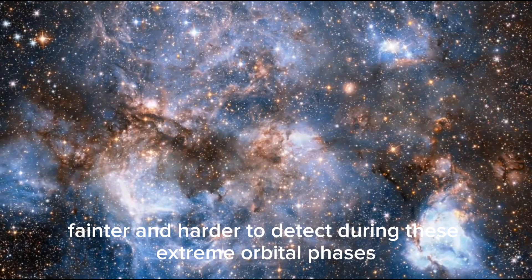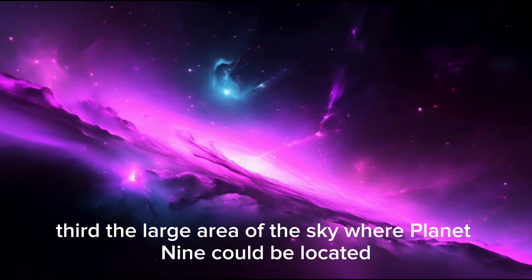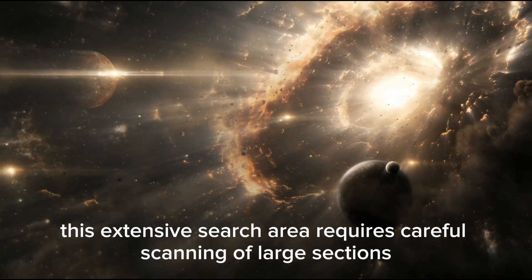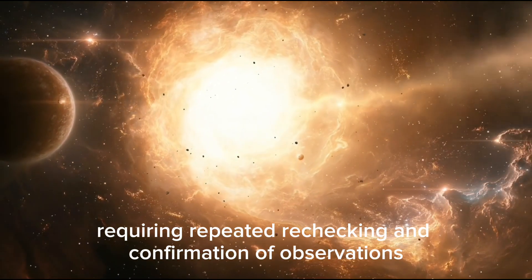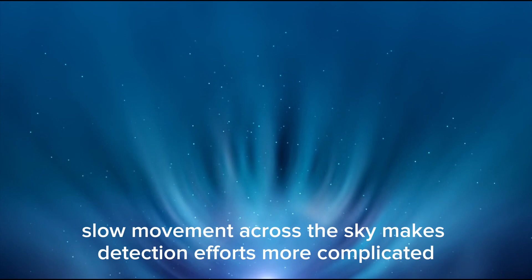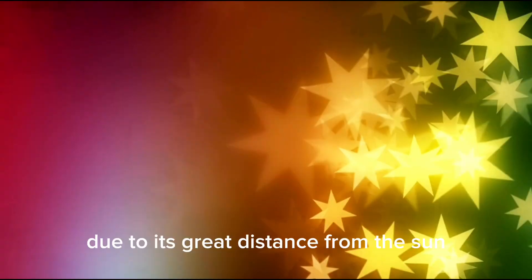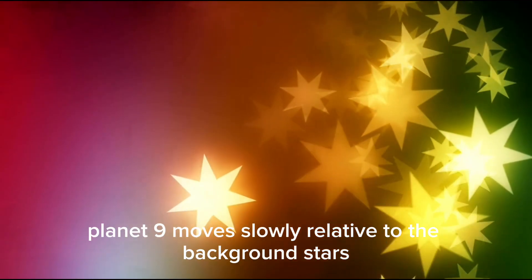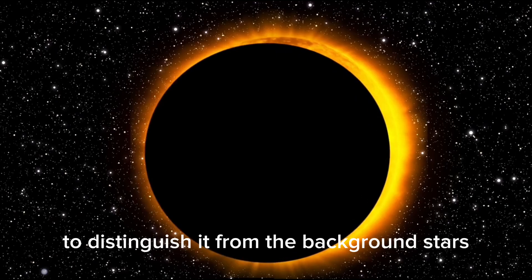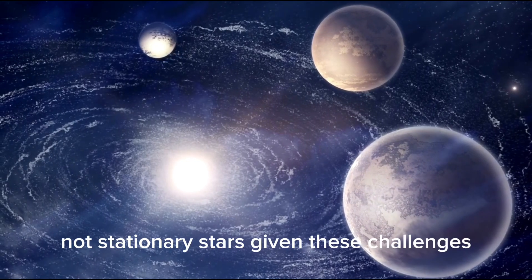Third, the large area of the sky where Planet 9 could be located makes the search difficult. This extensive search area requires careful scanning of large sections, requiring repeated rechecking and confirmation of observations. Finally, Planet 9's slow movement across the sky makes detection efforts more complicated. Due to its great distance from the sun, Planet 9 moves slowly relative to the background stars. This slow movement requires long and repeated observations to distinguish it from stationary stars.